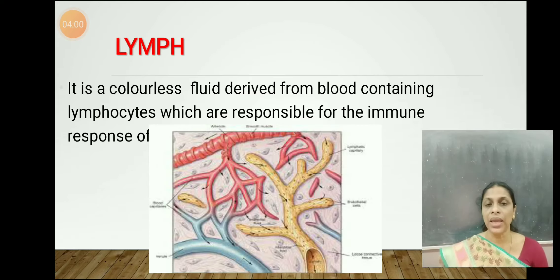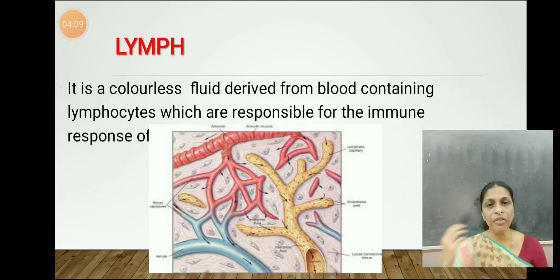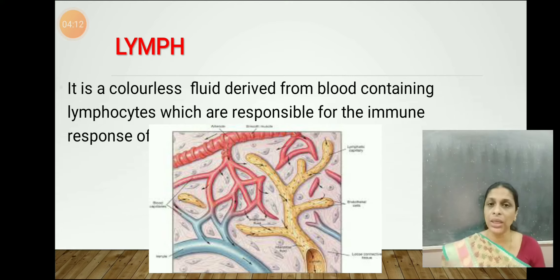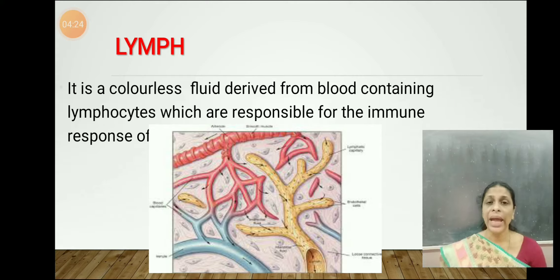Now let's see about lymph. Lymph is a colorless fluid which is derived from the blood. It does not have RBCs, WBCs, or platelets. It has some other cells called lymphocytes. So lymph is a colorless fluid derived from the blood and it contains lymphocytes.